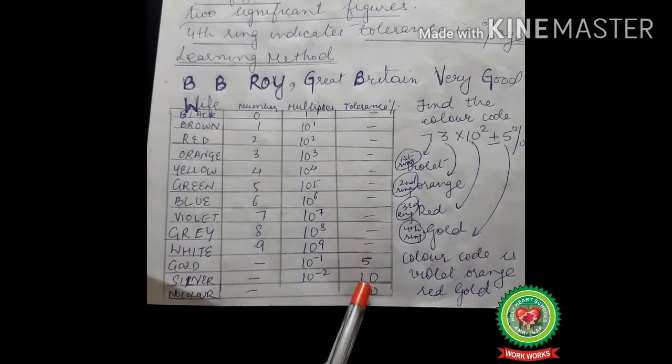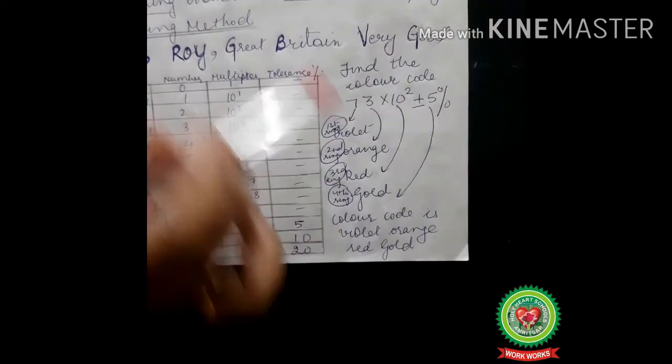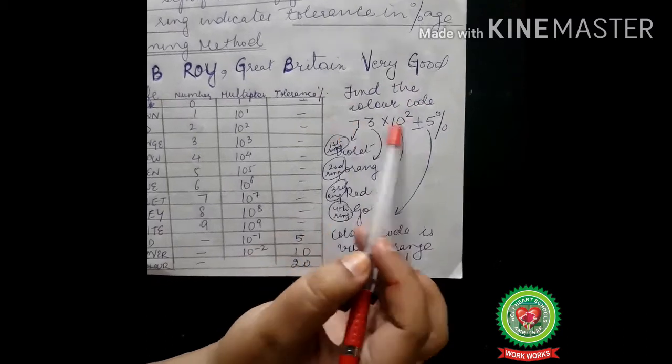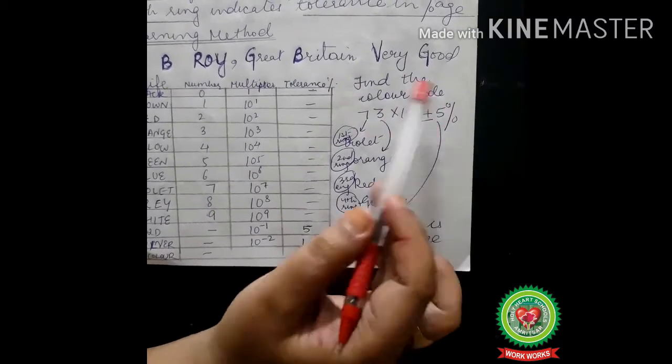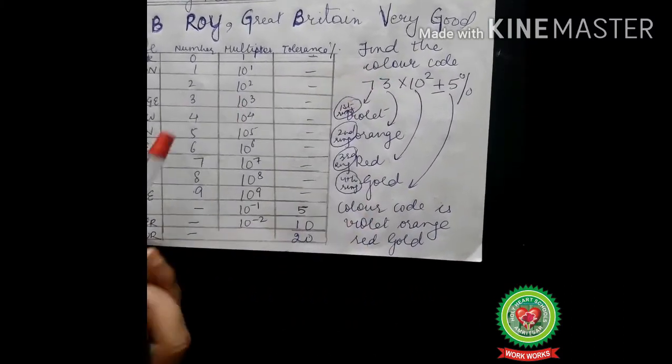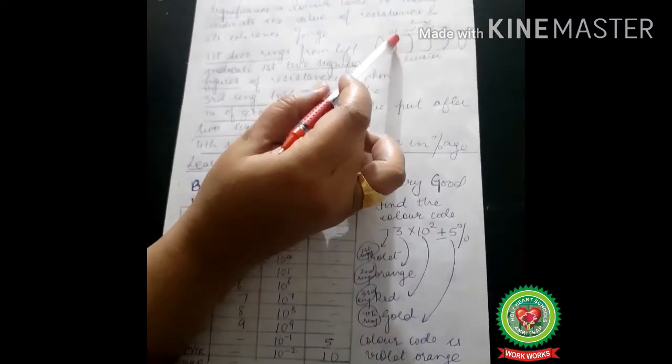Now if we take an example, we will understand things better. First one is find the color code. This is given: 73 × 10² ± 5%. This is the way how to write the color coding. If I say seven here, seven is violet. I've written here violet. Moreover, seven here, the first ring is seven. Then the second ring here is three. Three here is orange. I've written here orange.